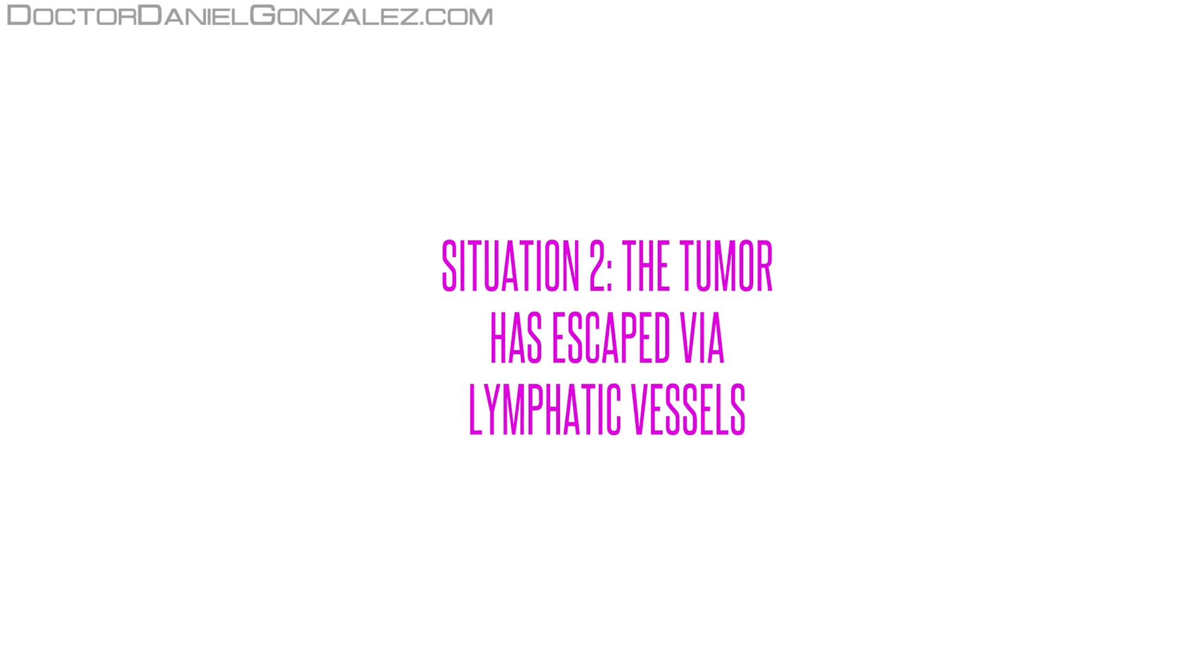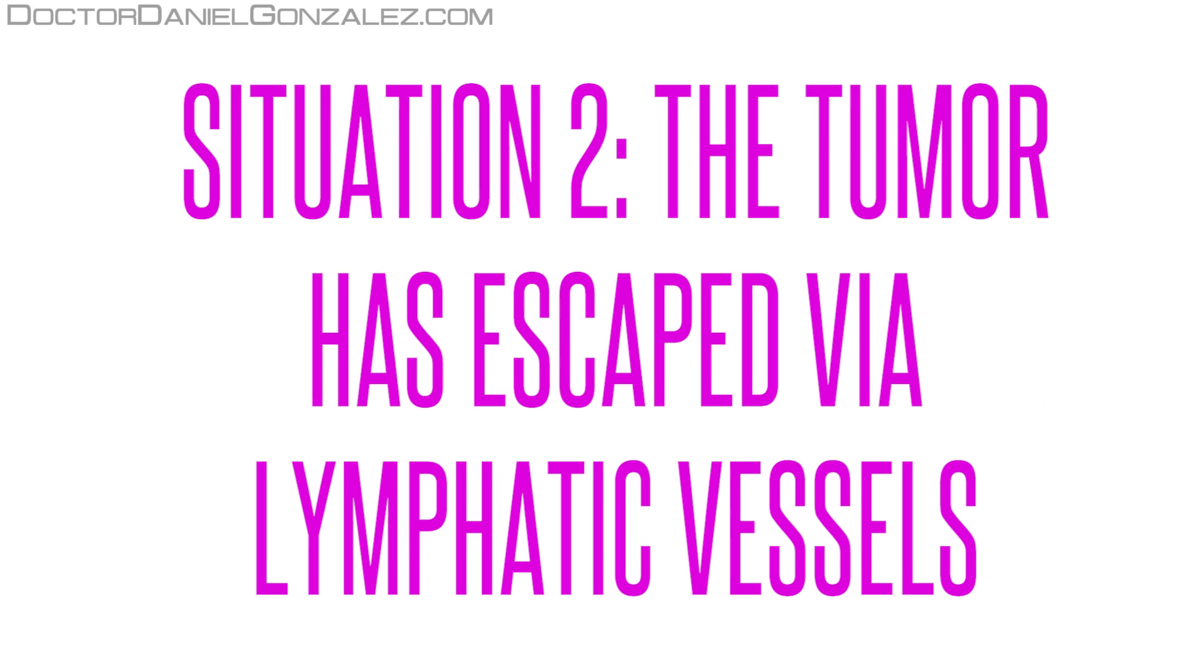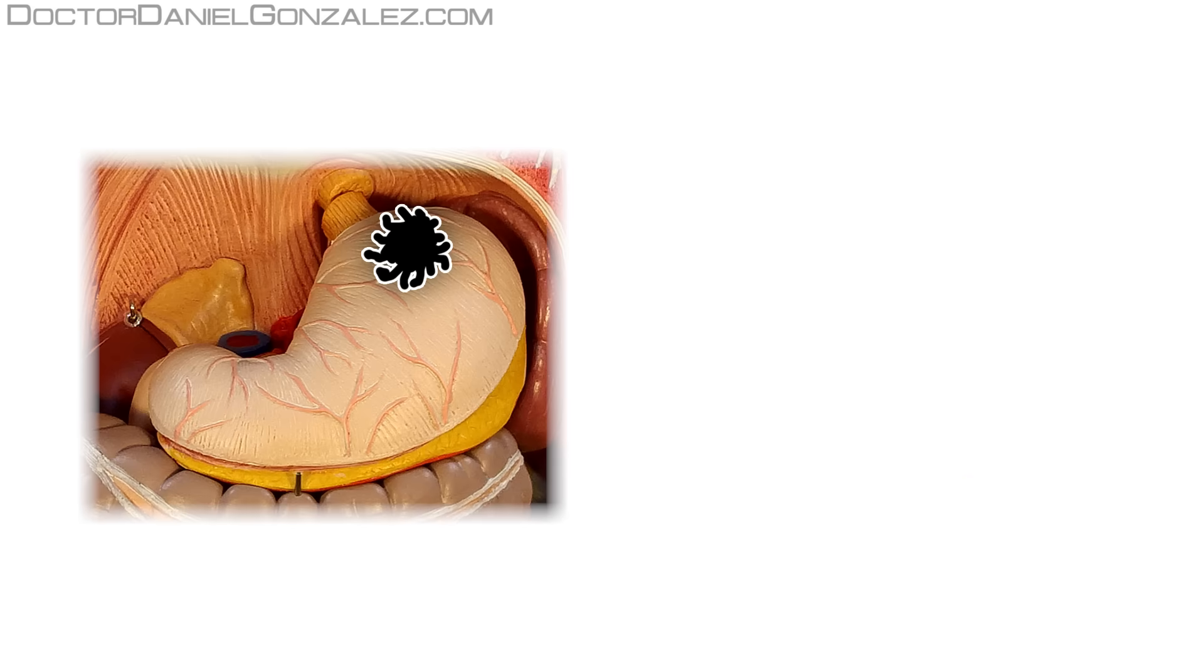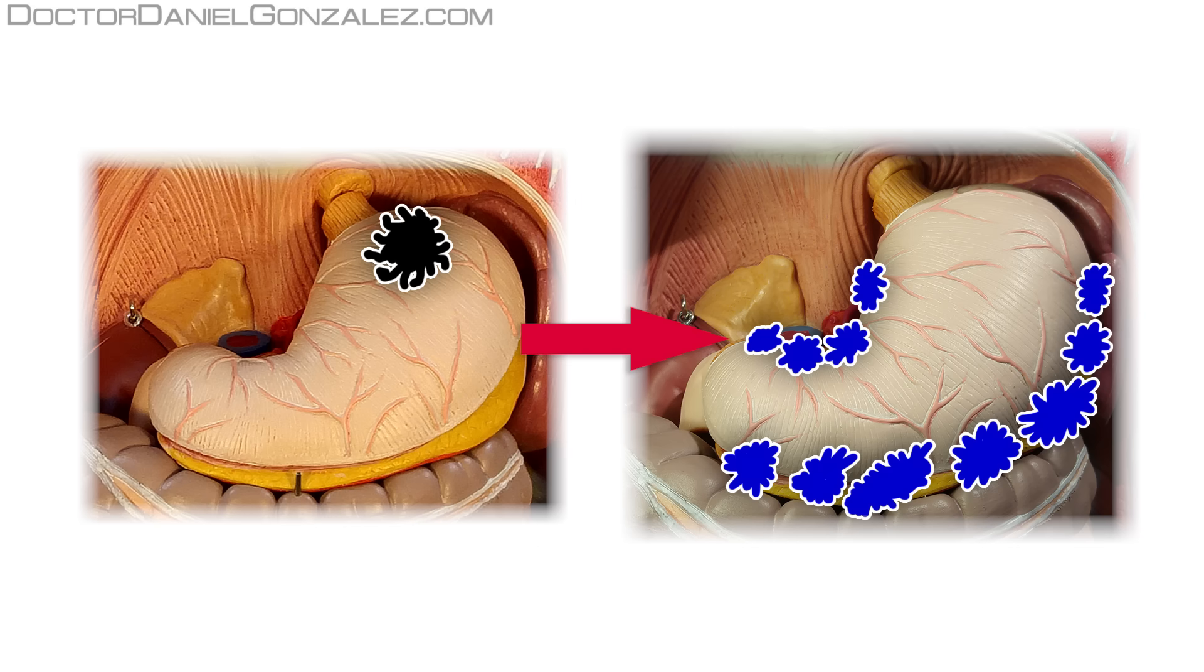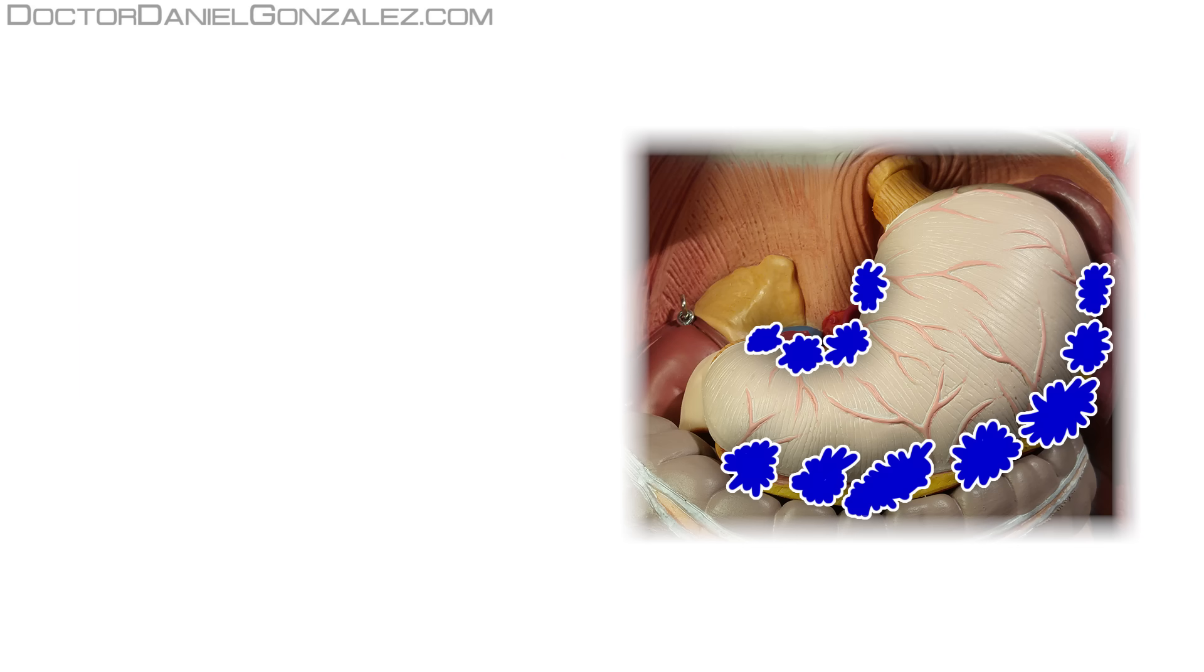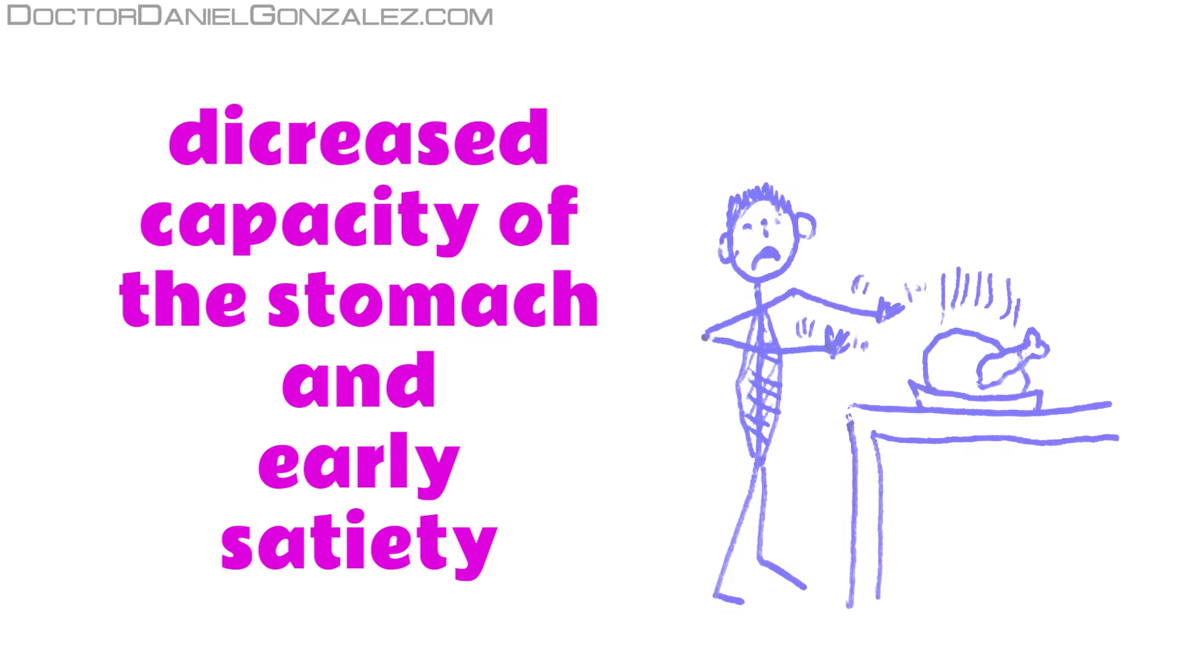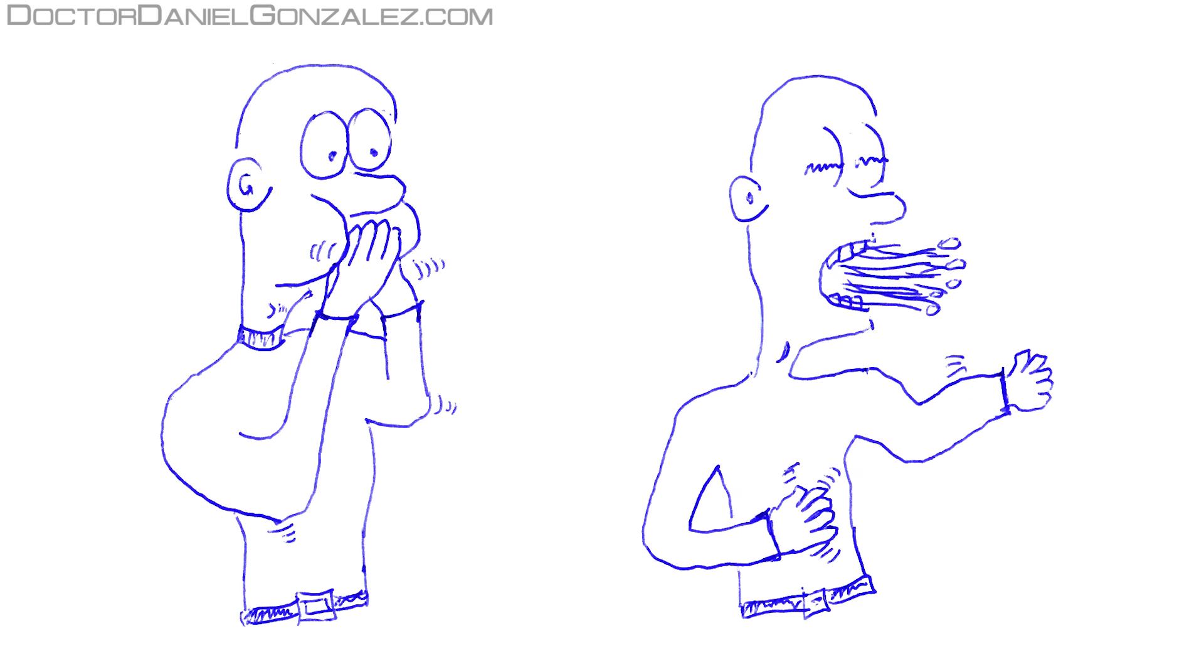Situation 2. The tumor has escaped via lymphatic vessels. Stomach cancer cells, when choosing the lymphatic route to escape the body, tend to accumulate first on the lymph nodes surrounding the stomach itself. Because of this accumulation of tumor cells, some symptoms can appear or become more pronounced, symptoms as a decreased capacity of the stomach and early satiety, and even nausea and vomiting.